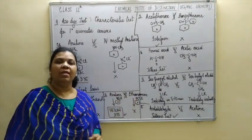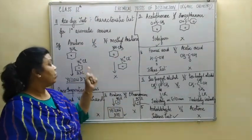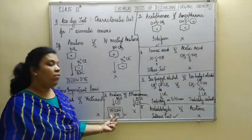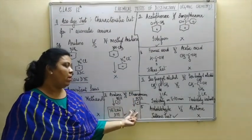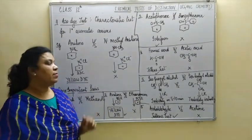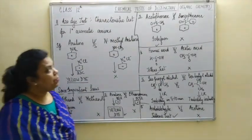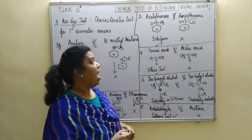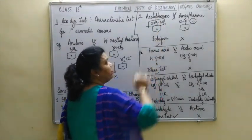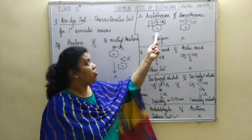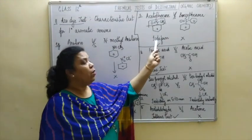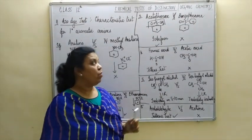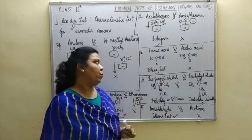The next pair is aniline versus ethanamine. We can apply the azo dye test. Aniline, being a primary aromatic amine, on addition of benzene diazonium chloride (BDC), will form a yellow colored dye. No such observation will appear on addition of BDC to ethanamine, since ethanamine is an aliphatic primary amine. The next pair is acetophenone versus benzophenone. Acetophenone contains a methyl ketone group — CH3CO — attached to the benzene ring. On addition of NaOH and iodine, you will get a yellow precipitate of iodoform. So iodoform test is positive for acetophenone, but not for benzophenone due to absence of the CH3CO methyl ketone group.